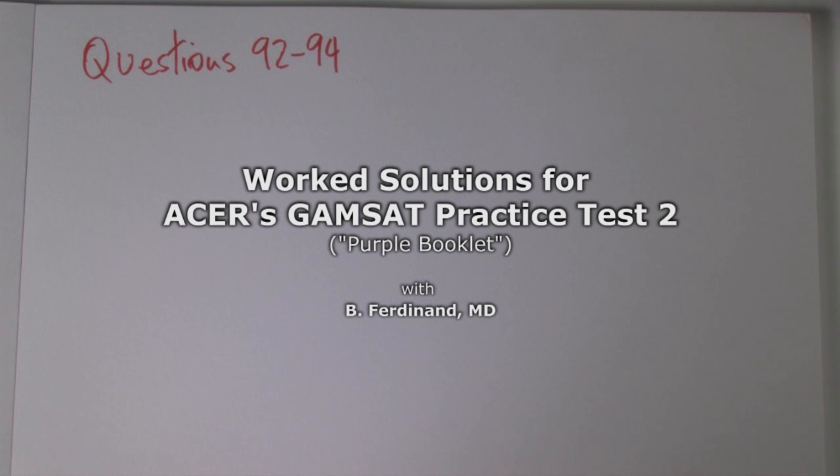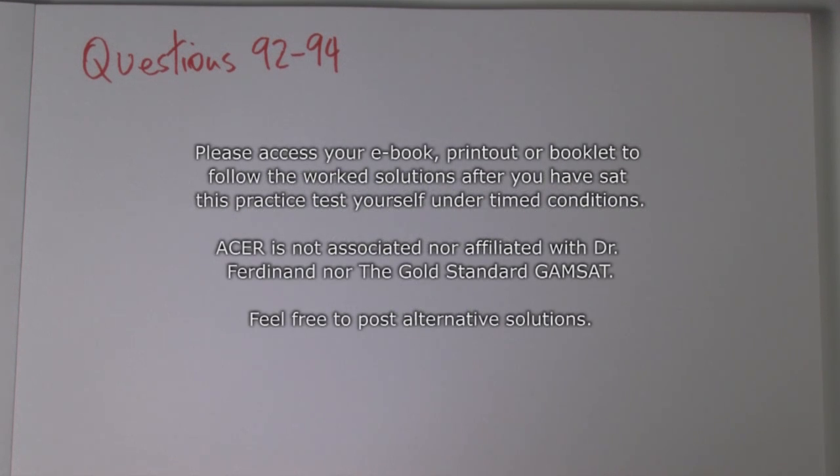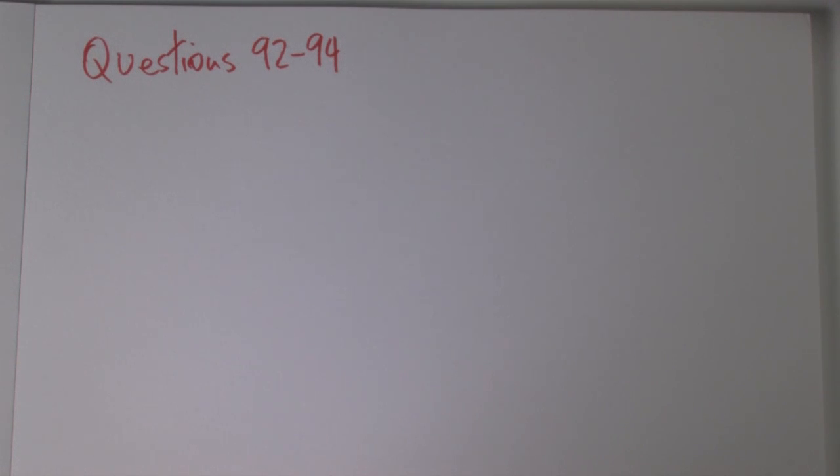Questions 92 to 94 talk about hydroxy groups on different carbon atoms. Two hydroxy groups on the same atom is unstable. Loss of water from the two groups results in the formation of a carbonal group. We'll keep that in mind.